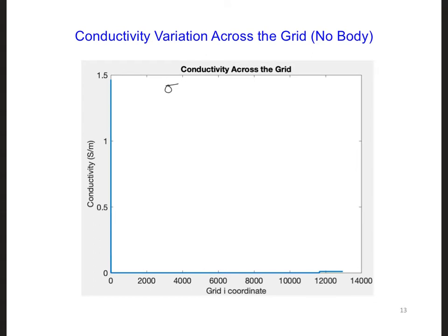Then for the conductivity, this is what I have when there's no body in the snow. Before, it was helpful to plot the conductivity on a log scale in the PML. But since the conductivity is zero in the air region, a log scale isn't going to work as well here.